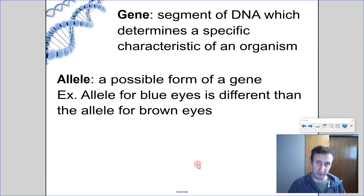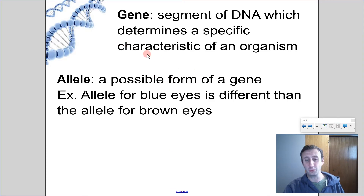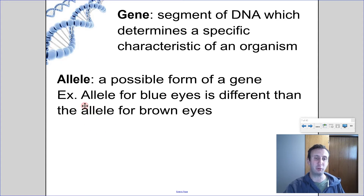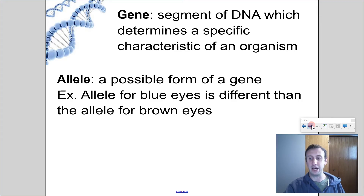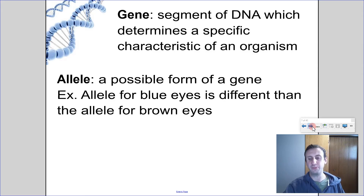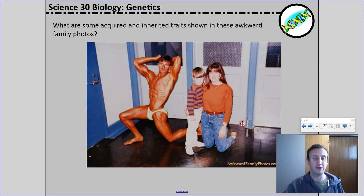A gene is a segment of DNA that codes for or gives instructions for making a protein, which actually determines a specific characteristic of that organism. An allele is a possible form of a gene. When I talk about tongue rolling, you either have the allele for tongue rolling or you have the allele for non-rolling. An allele for blue eyes is different than the allele for brown eyes — they're different forms of the same gene. It's like different answers to a question; the alleles are the possible forms you can have for that particular trait.